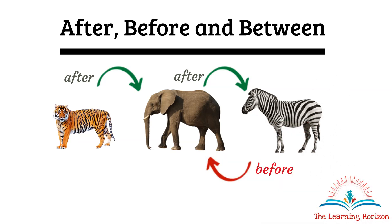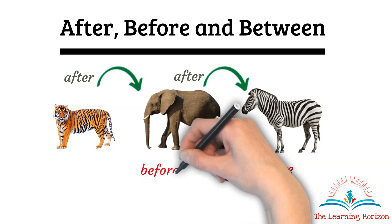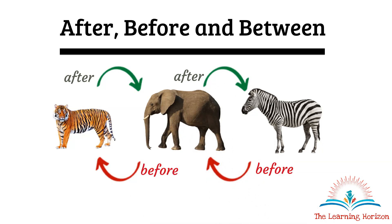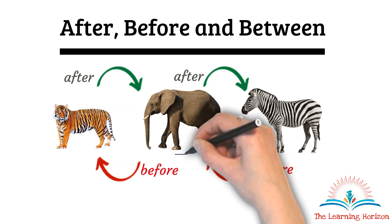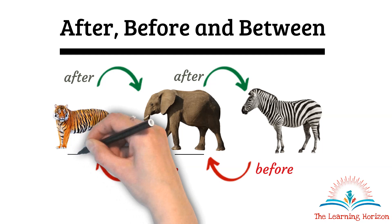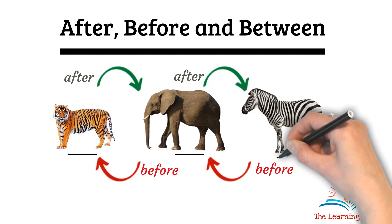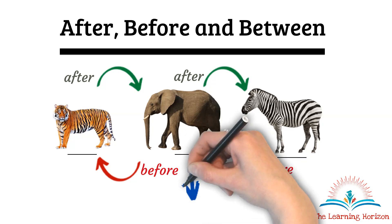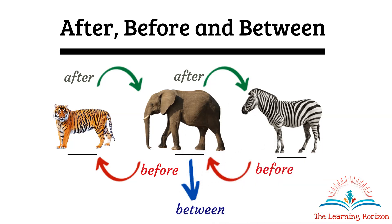Then which was the animal that came before zebra? It was an elephant. Which was the animal that came before elephant? It was a tiger. Now look at the elephant — where is he standing? Elephant is in the middle of these two animals, so we can say elephant is in between tiger and zebra.